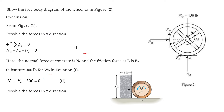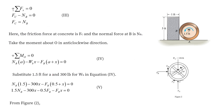Substituting the value of Wb: Nc − Fb − 300 = 0. We name this equation 2. Now resolving forces in the x direction on the concrete — the friction force at point C acts in one direction and the normal reaction at point B acts in the other. Considering rightward forces as positive and leftward as negative: Fc − Nb = 0, so Fc = Nb. We name this equation 3.